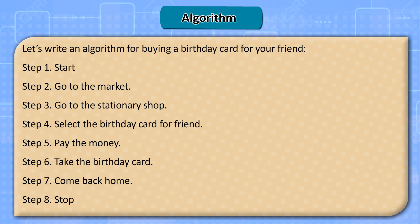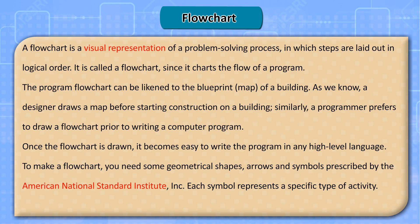Let's write an algorithm for buying a birthday card for your friend. Step 1 - start. Step 2 - go to the market. Step 3 - go to the stationary shop. Step 4 - select the birthday card for your friend. Step 5 - pay the money. Step 6 - take the birthday card. Step 7 - come back home. Step 8 - stop.